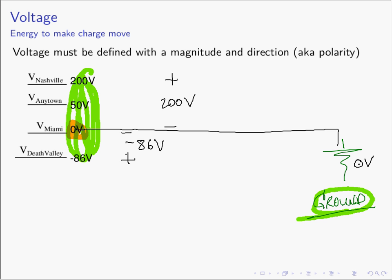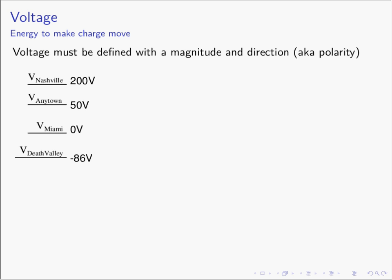A more common example would be: what is the voltage of Anytown with respect to Death Valley? That answer is 136 volts. Or, what's the voltage of Death Valley with respect to Nashville? That answer would be negative 286 volts. So voltage is a relative measure. We do have an absolute reference for our voltages — it's called ground — but we don't use it the majority of the time. We reference our voltages to some other energy level in the circuit or some other energy level of interest. We will continue in the next videos and start using these voltages with current, power, and energy, and then we will start solving practical circuits.